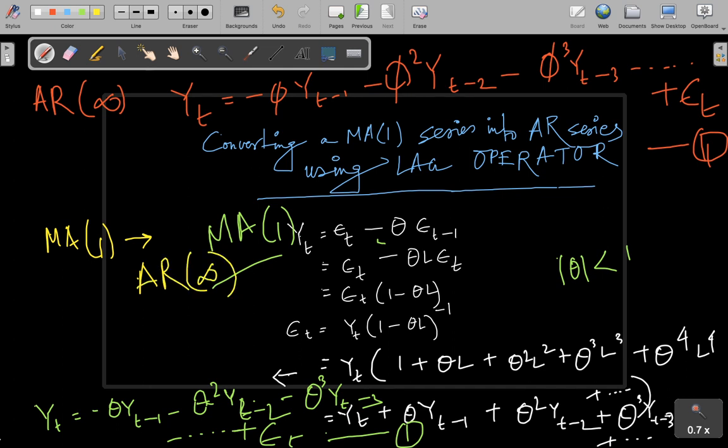So mathematically we can show that an MA(1) series could be converted into an AR infinite series. Now the point is it's all good, but it's only a mathematical proof. We could have reached there just by mathematical manipulation. But the question is: so what? I mean, why do I really need to do all this mathematics and prove all this? Is it just a fancy thing, or is there any utility to that?